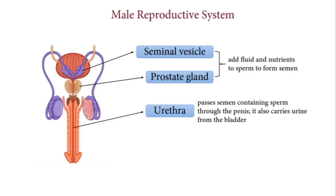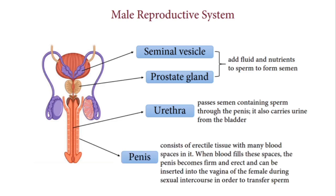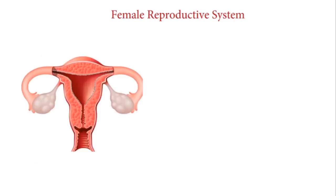The seminal vesicle and the prostate gland add fluid and nutrients to sperm to form semen. The urethra passes semen containing sperm through the penis and also carries urine from the bladder. The penis consists of erectile tissue with many blood spaces in it; when blood fills these spaces the penis becomes firm and erect and can be inserted into the vagina during sexual intercourse to transfer sperm.